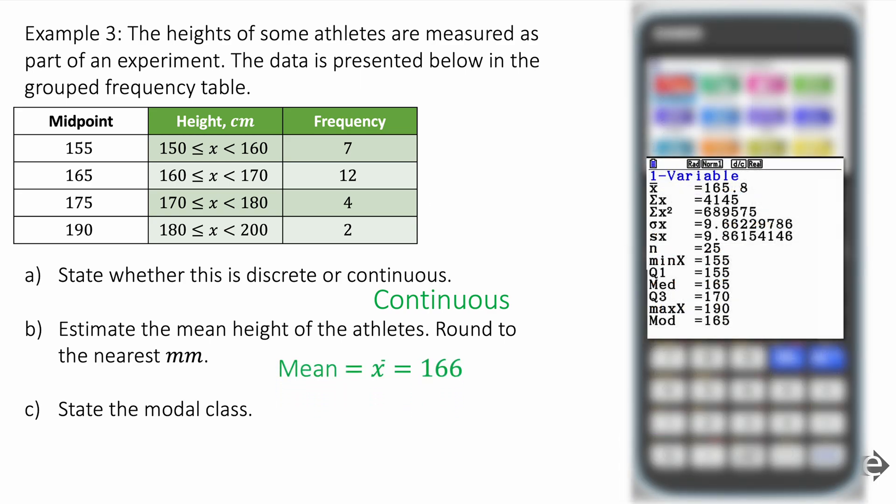And it looks like this. X bar is 166 to three significant figures. And the modal class is the class with the highest frequency. And you can see from the list, 12 is the highest frequency, and that corresponds with the modal class of 160 is less than or equal to X is less than 170. Like this. Fantastic. And we are done.